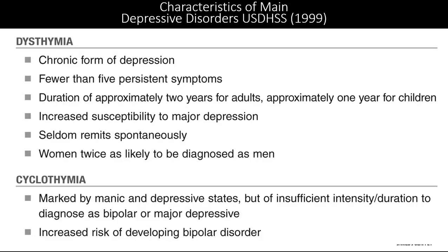Dysthymia is a chronic form of depression — fewer than five persistent symptoms, duration of approximately two years for adults and one year for children, increased susceptibility to major depression, seldom remits spontaneously, and women are twice as likely to be diagnosed as men — though they may also be twice as likely to visit a GP in general. Cyclothymia is marked by manic and depressive states but of insufficient intensity and duration to be diagnosed as bipolar or major depressive, with increased risk of developing bipolar disorder.